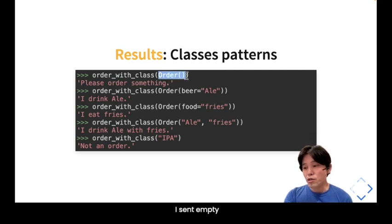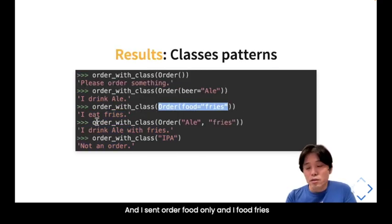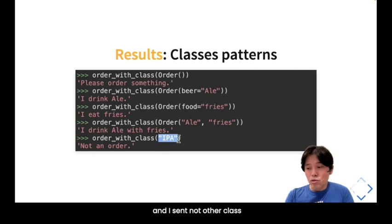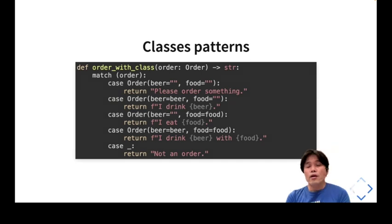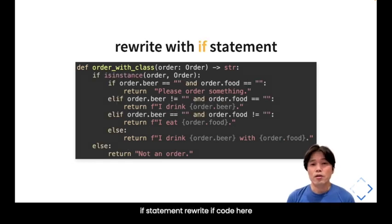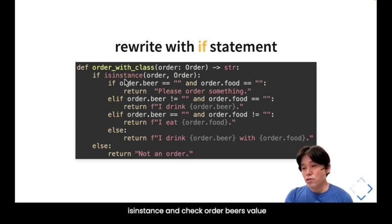The results: sending an empty order returns 'please order something'. Sending beer only returns 'I drink well'. Sending food only returns 'I eat fries'. Sending both beer and food returns 'I drink beer with food'. And sending a non-Order class object returns 'not an order'. Writing this with if statements using isinstance and attribute checks looks a lot more cluttered.